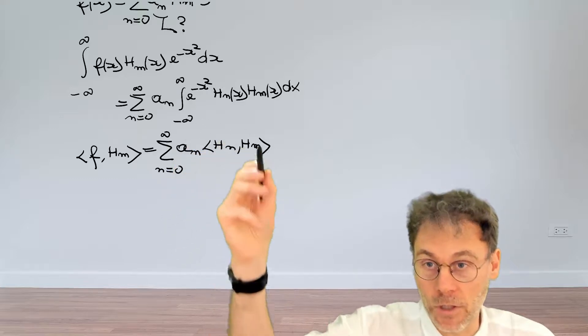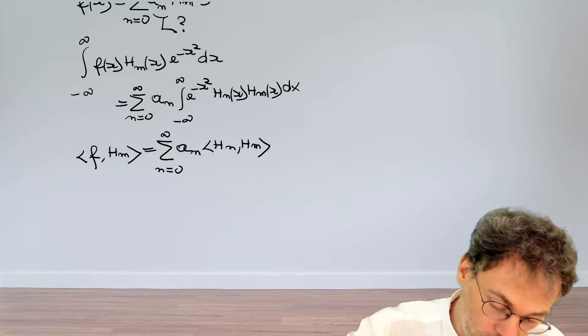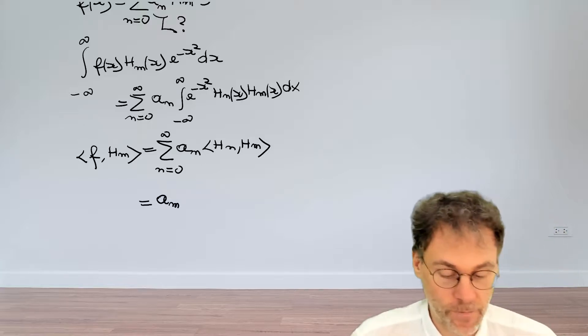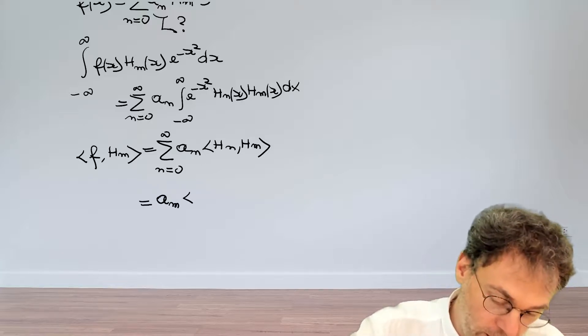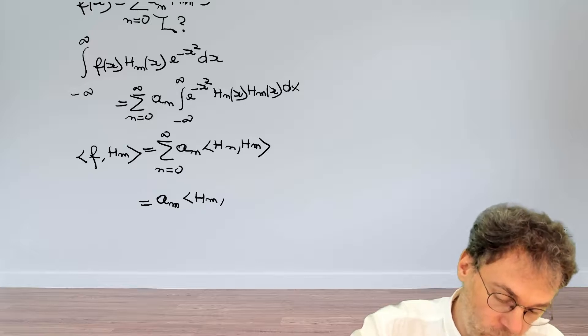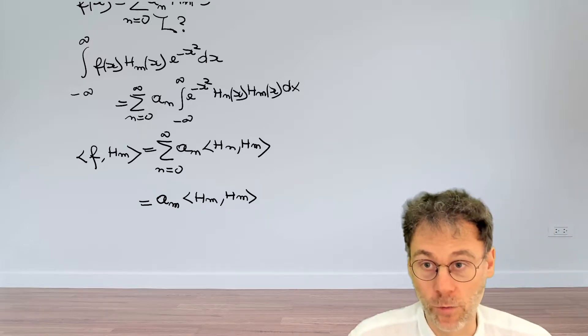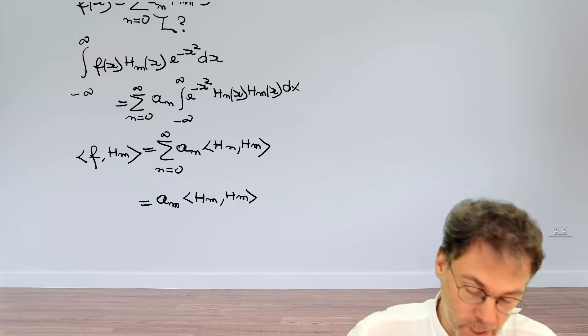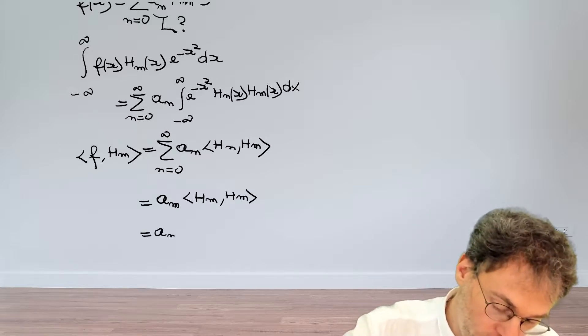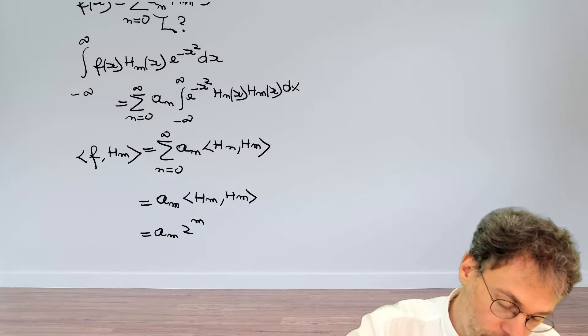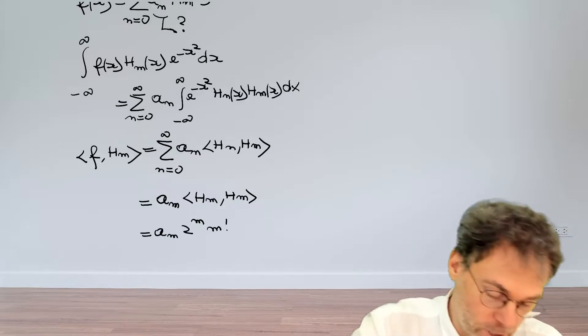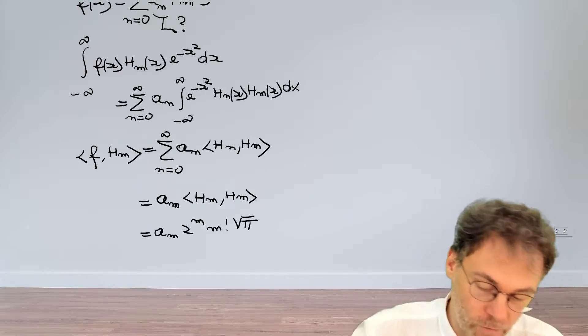So rather than having a sum here, thanks to the orthogonality we only have a single term left of that sum and that is a_m, and here we have H_m·H_m. And that is the normalization integral which we calculated the value to be 2^m m! √π.